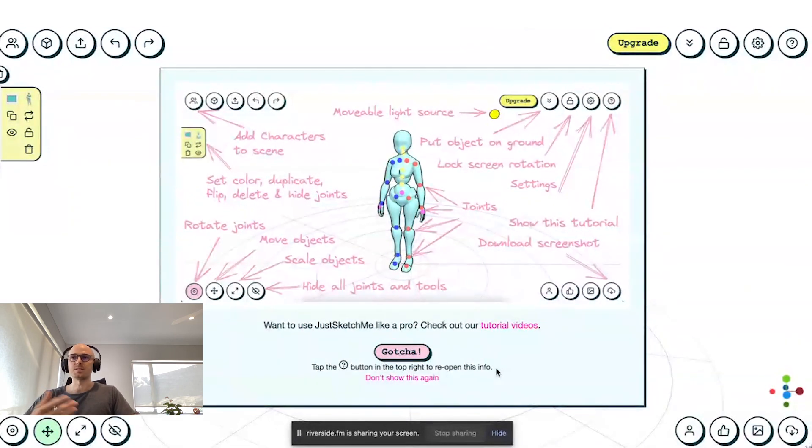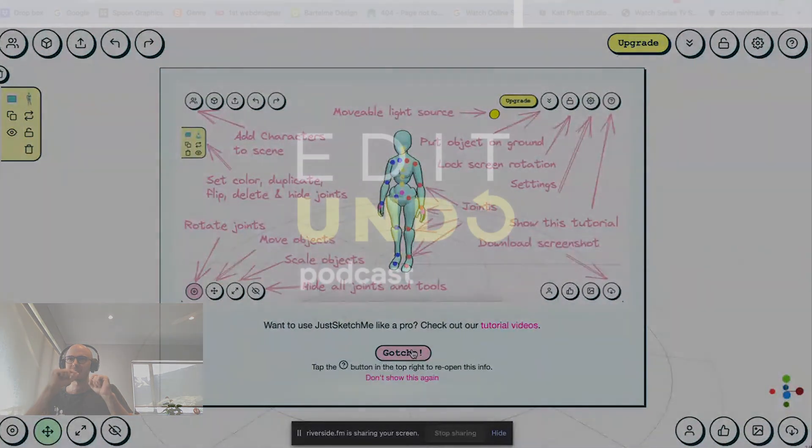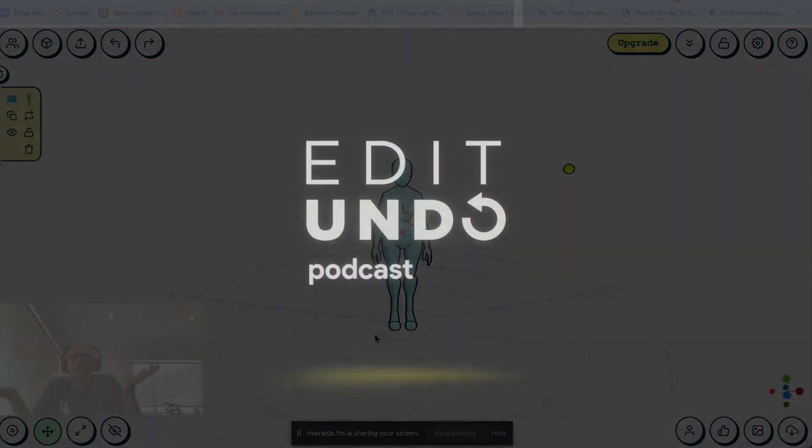And you can create very big, fancy dynamic scenes with this, and you can even import your own 3D models and stuff. But from the get go, what I really want to do is, you know, those little wooden mannequins that artists use. I just want to make that.